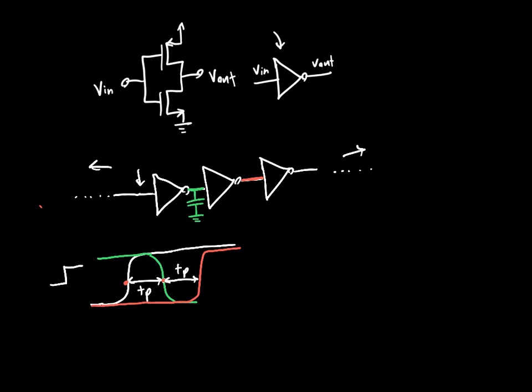So the 50% rise time is the most useful measure for symmetric inverters. Because there's no dead time in between. It just takes TP for the signal to propagate from one inverter to the next. And then it takes TP for it to propagate to the next. And then after N propagations, it'll take N times TP for the output to get high.